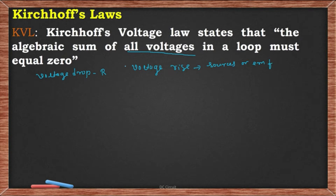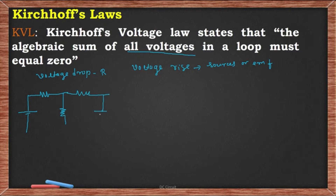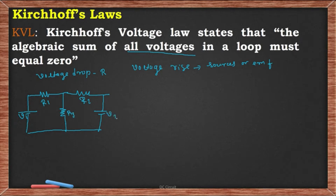Let us understand KVL through a circuit. We have a voltage source V1, followed by resistors R1, R2, R3, and another source V2, all connected in a closed path. We name the nodes A, B, C, D.